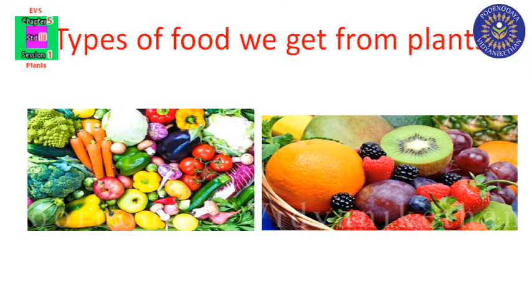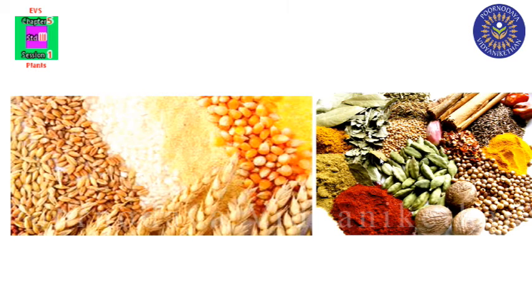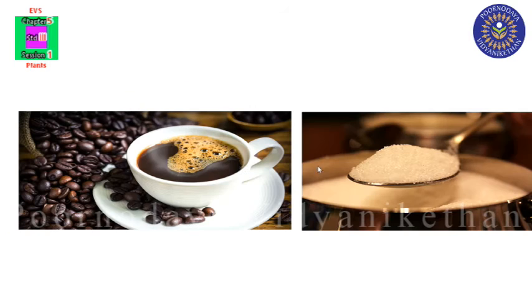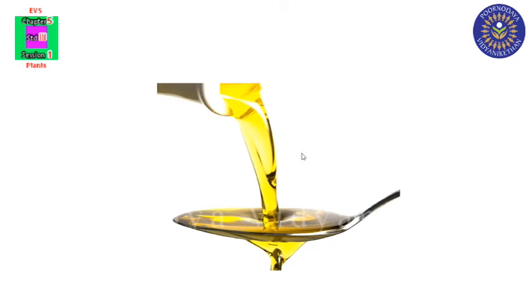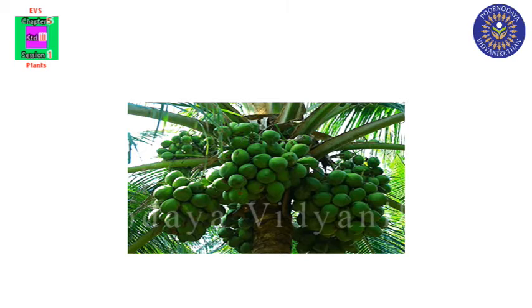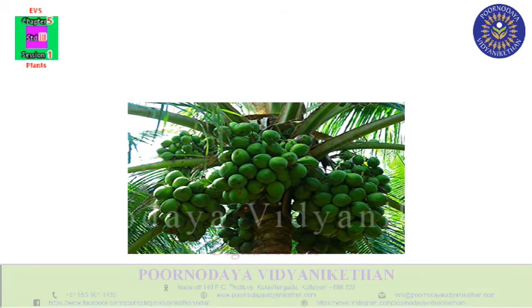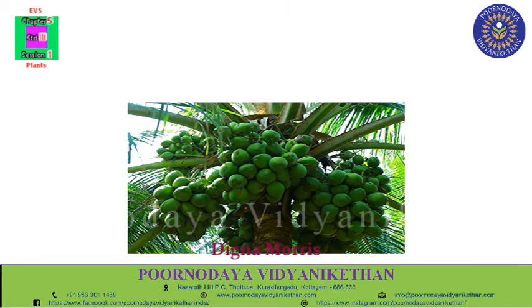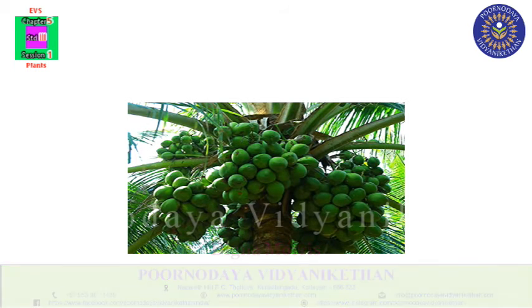Now we can learn about types of things we get from plants. Plants like cotton, jute, and coconut give us fiber. From fiber we make cloth.